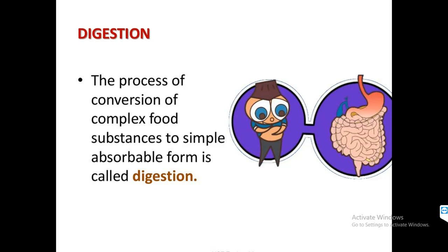In the case of proteins, they are not directly consumed — they are broken down into their single unit, which is amino acids, the building blocks of protein. Same in the case of lipids. There are two types of digestion: intracellular and extracellular digestion.